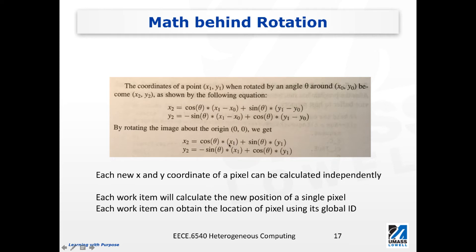There are no dependencies between x1 with y2 or y1 with y2. We can think of a very simple and intuitive way to parallelize these operations. Specifically, we can assign each work item to calculate the new position of a single pixel. For all pixels in the original picture, we calculate the new location and assign the pixel information there. Each work item obtains the pixel's location using its global ID, which is how we initialize the dimensions and work group size before instantiating the kernel.